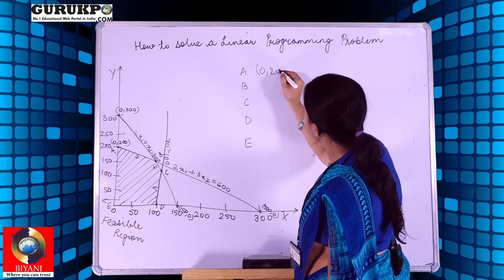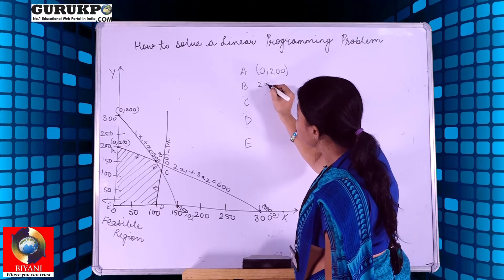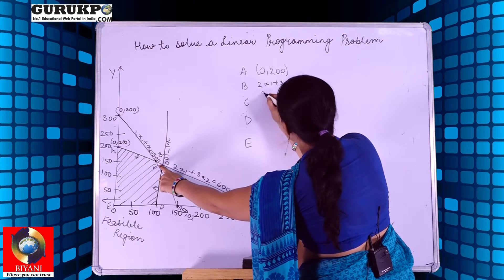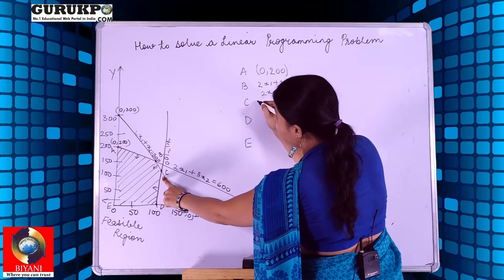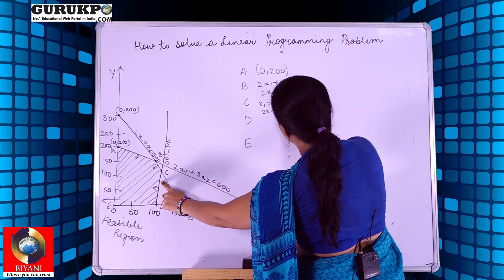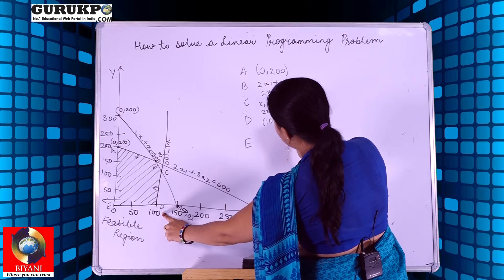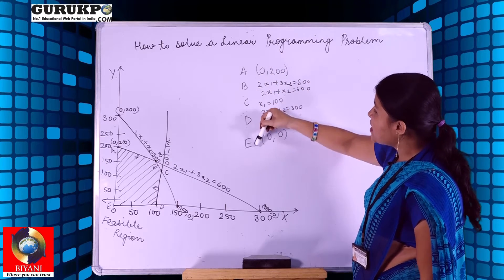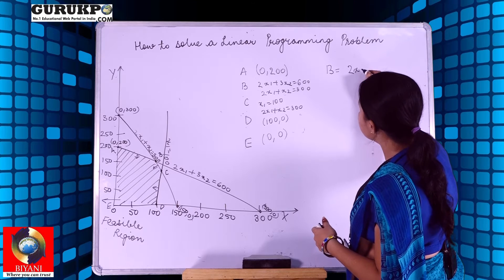Point A is (0, 200). Point B must be calculated — it arises from the intersection of the lines 2x1 + 3x2 = 600 and 2x1 + x2 = 300. Point C arises from the intersection of x1 = 100 and 2x1 + x2 = 300. Point D is already available as (100, 0) and point E is (0, 0). Points B and C need to be calculated.